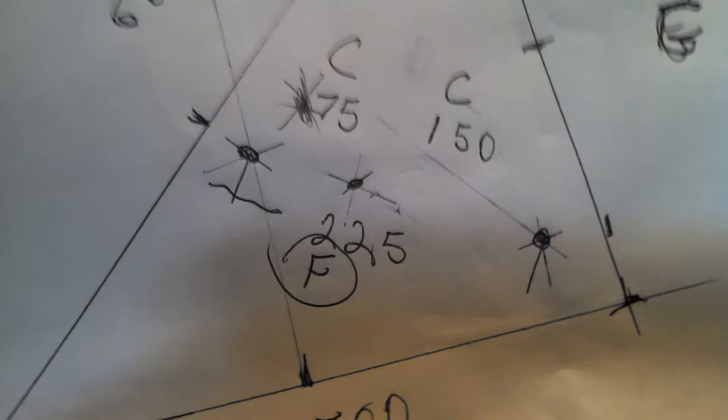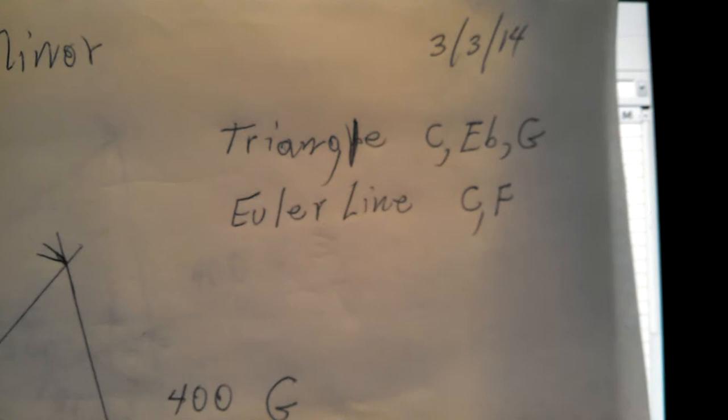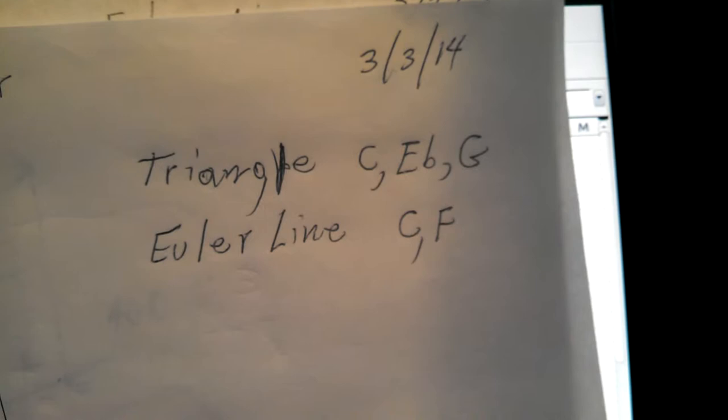I can show how I got these ratios too at some point. It's the third of March on 2014 anyway. The triangle for the C minor is C, E flat, and G, and the Euler line notes end up being C and F.